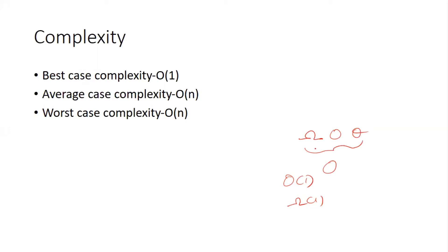For the average case, if the element is somewhere in the middle of the list, that gives us the average case complexity. The worst case occurs when the element is at the last position or not present in the list. In linear function terms, O(n) represents both the worst and average case complexity.